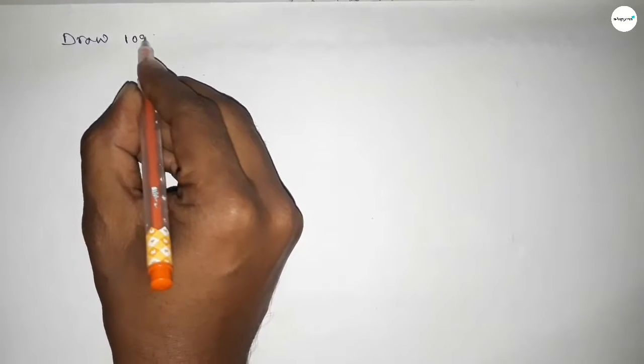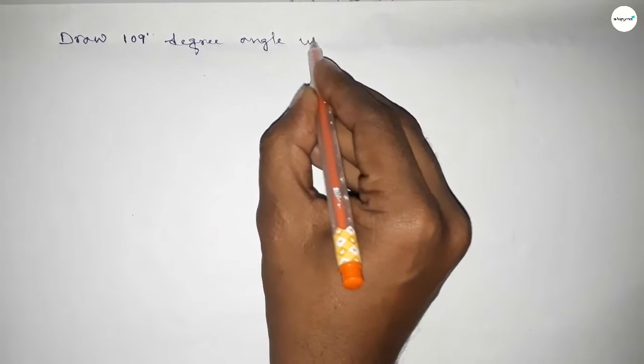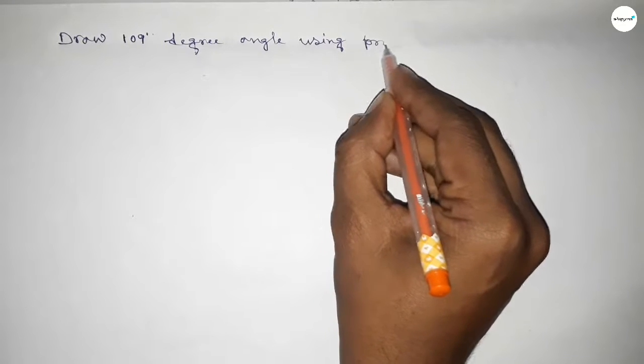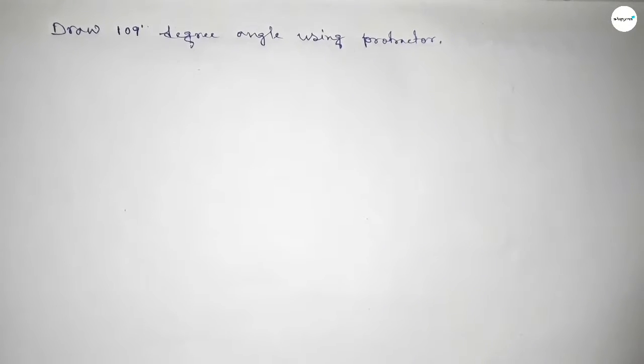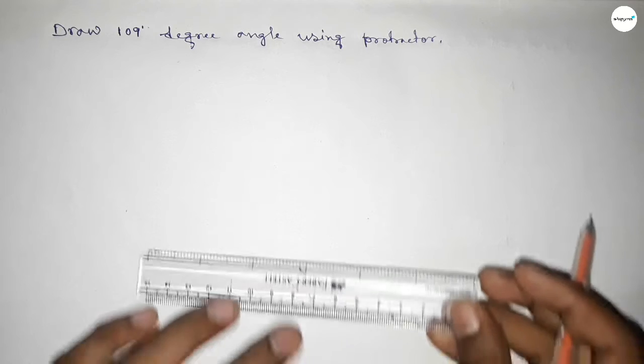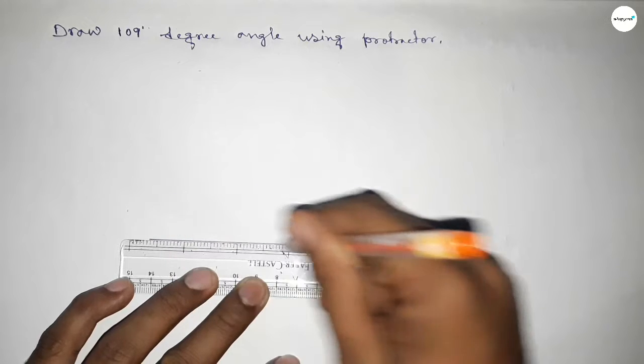Hi everyone, welcome to SI Share Classes. Today in this video we have to draw a 109 degree angle by using protractor. So let's start the video. First of all, we have to draw here a straight line of any length.